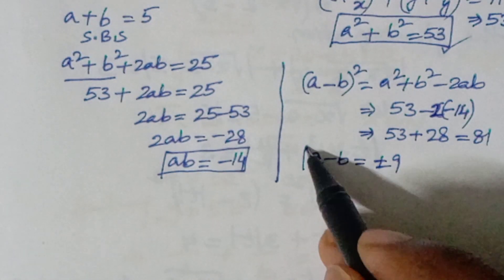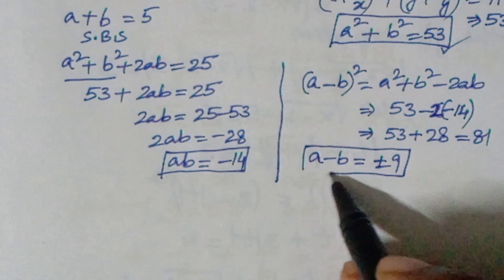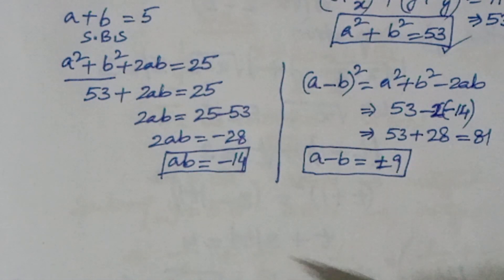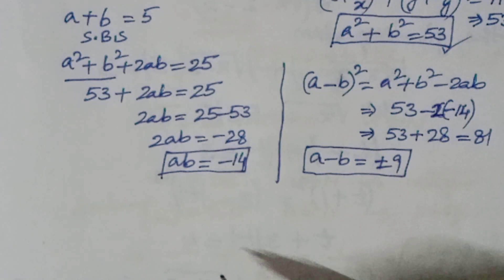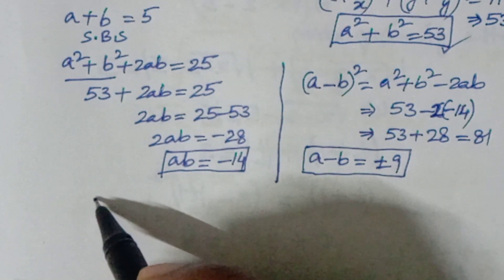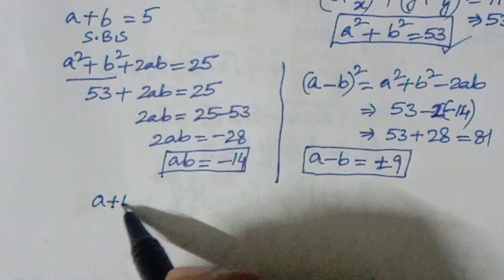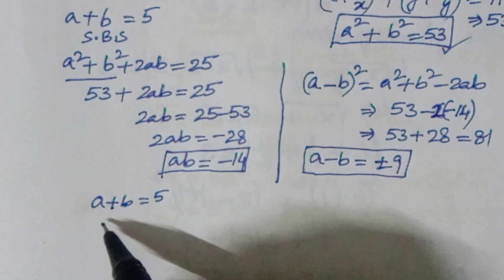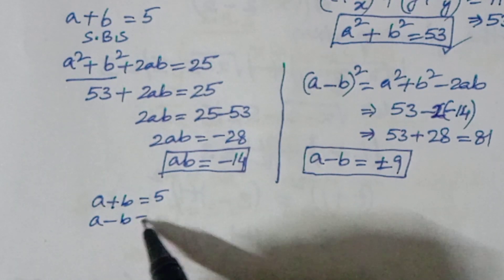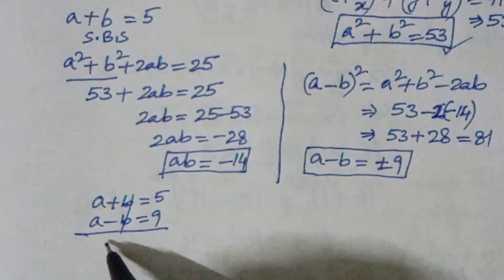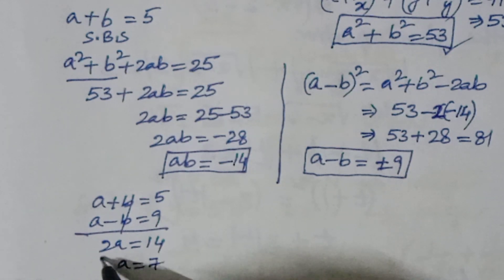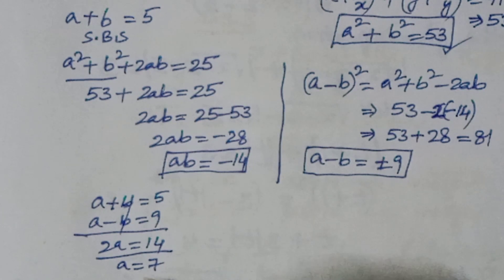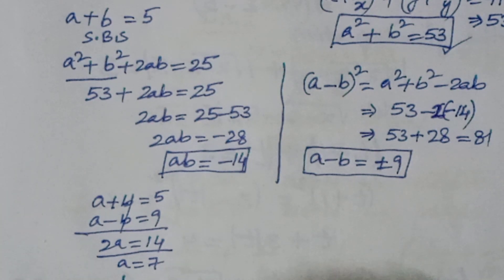So a - b = ±9. Taking a + b = 5 and a - b = -9: adding gives 2a = -4... wait, actually taking a - b = -9: 2a = 5 + (-9)... Let us take a + b = 5 and a - b = -9, giving 2a = -4... Actually for the first case: a + b = 5, a - b = 9 gives 2a = 14, so a = 7 and b = -2.